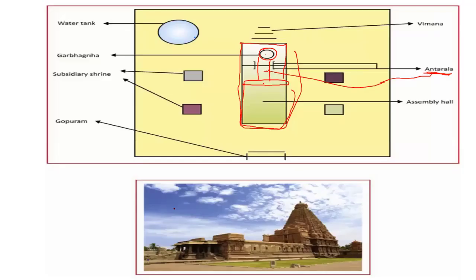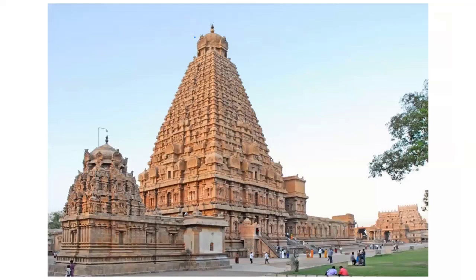An example of Dravidian style of architecture is the Brihadeshwara temple. The Brihadeshwara temple is in Tanjore, Tamil Nadu, and the Gangaikondapuram temple is in Gangaikondapuram town, also in Tamil Nadu. The Brihadeshwara temple was constructed under the reign of Chola ruler Rajendra Chola. Brihadeshwara temple is the biggest and largest granite temple in the world, and is a great example of Dravidian style of architecture. We can see how big the Vimana is.